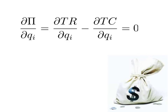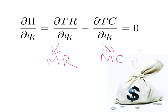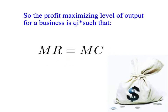We know that the change in total revenue with the change in quantity is simply our definition of marginal revenue. And similarly, we know that the change in total cost with a change in quantity is just our definition of marginal cost. So to find our profit maximizing level of output, we want to find the level of output where marginal revenue minus marginal cost equals zero — or equivalently, where marginal revenue equals marginal cost. That level of output will be our profit maximizing level of output.